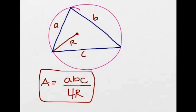So let's say you have a triangle with side lengths A, B, and C, and you're given the circumradius of R.